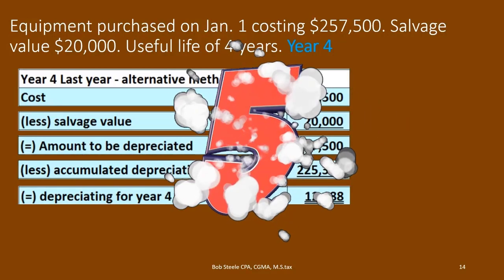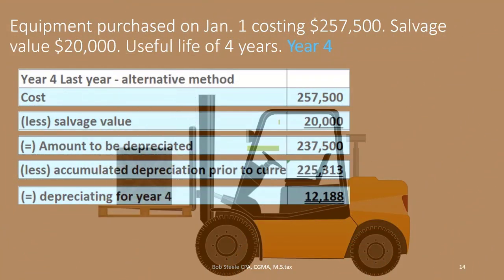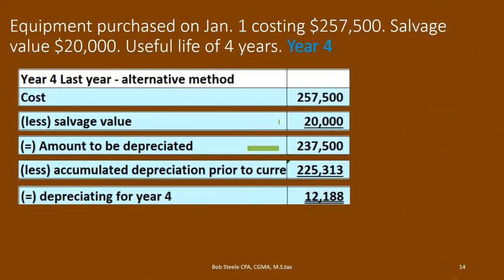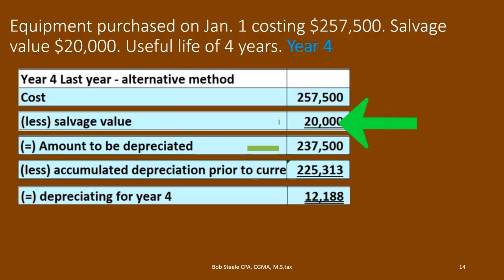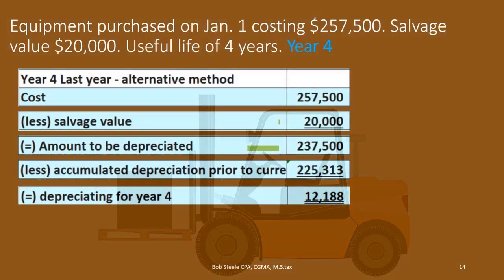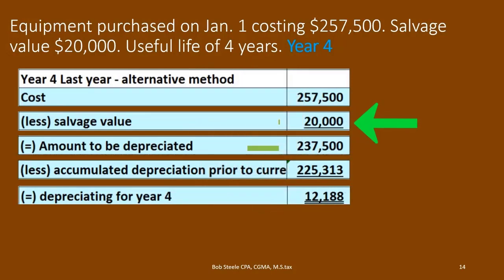In year five we stop depreciating entirely. The equipment may still be in use, but we will not allocate any cost below the salvage value. We cannot record an expense that isn't part of the cost. If the estimate was significantly wrong — for example, we're still using the equipment well past the useful life — we may need to re-estimate, but if the difference is immaterial, we simply leave it at the floor value.